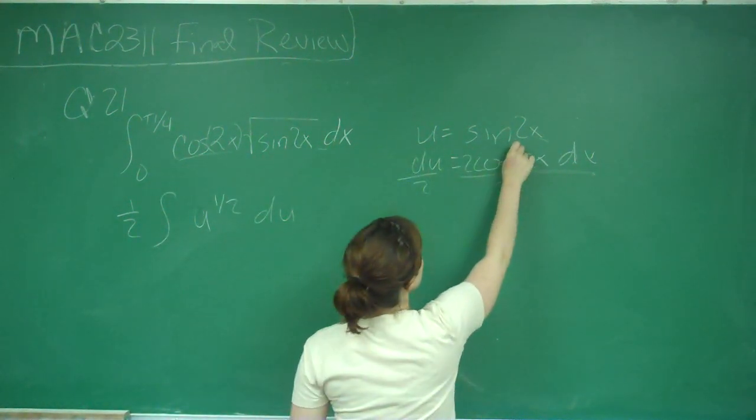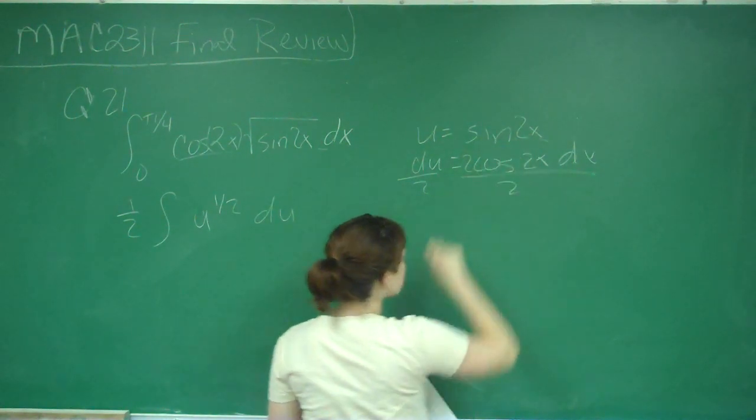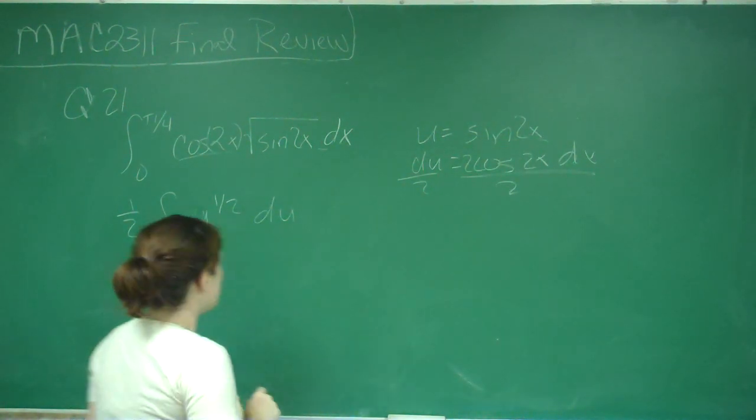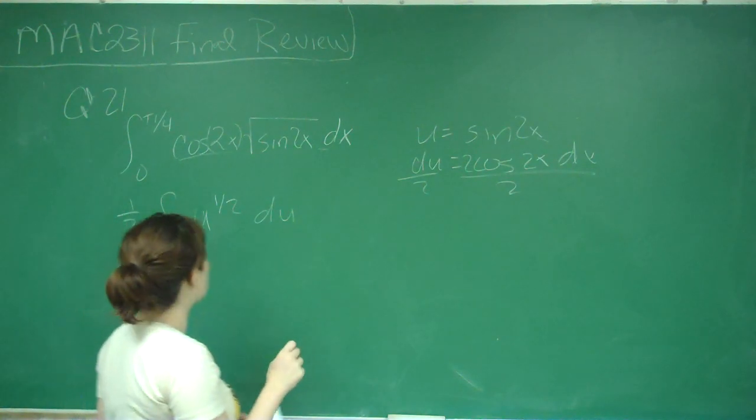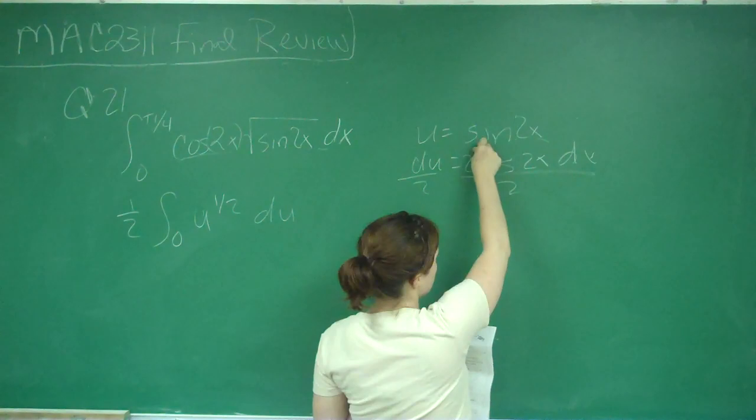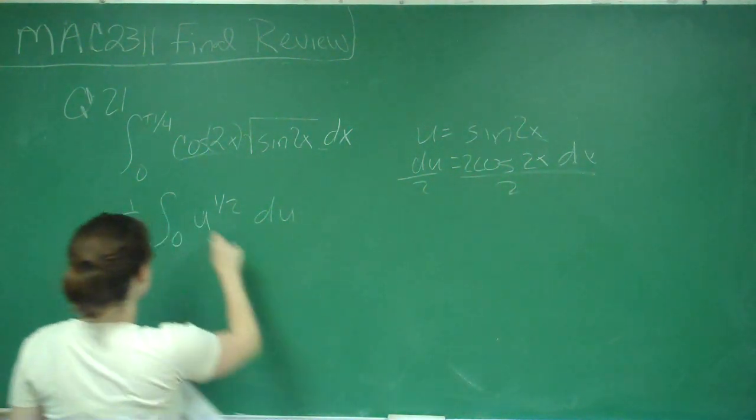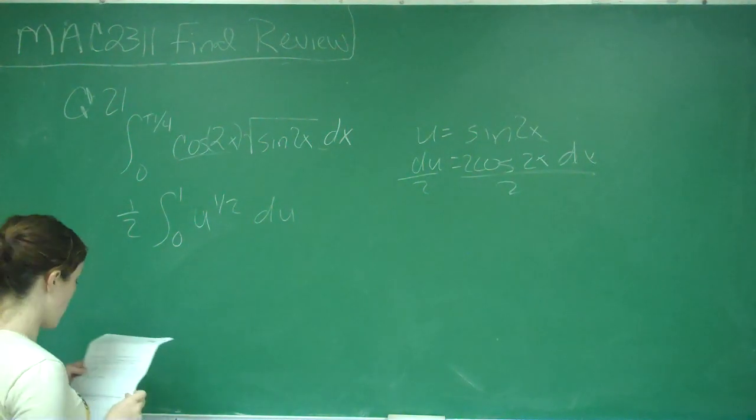So what you do is you plug in the lower bound, so 0 into u. Sine of 0 is 0, so that stays. And then we plug in pi over 4. So sine of 2 times pi over 4 is the same thing as sine of pi over 2, which is 1. So our bounds change from 0 to 1.